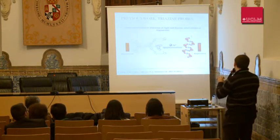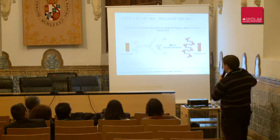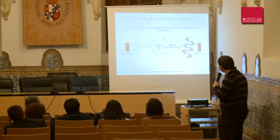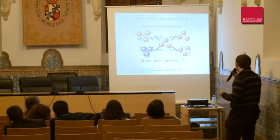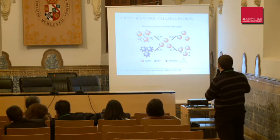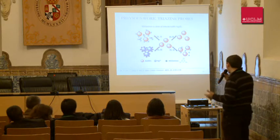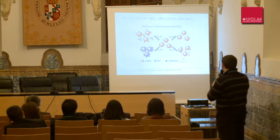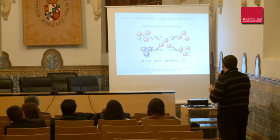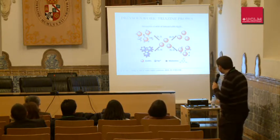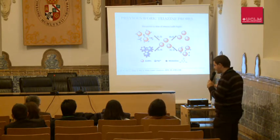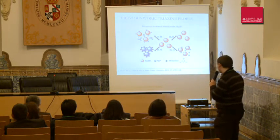In one case, triazine doesn't interact with mercury directly, but it is the theming which induces aggregation, and disaggregation induces strong fluorescence. In another example, melamine interacts with gold nanoparticles, and the authors propose that melamine interacts with mercury more strongly than with gold nanoparticles. This modifies the optical properties of the system, giving a chemosensor.